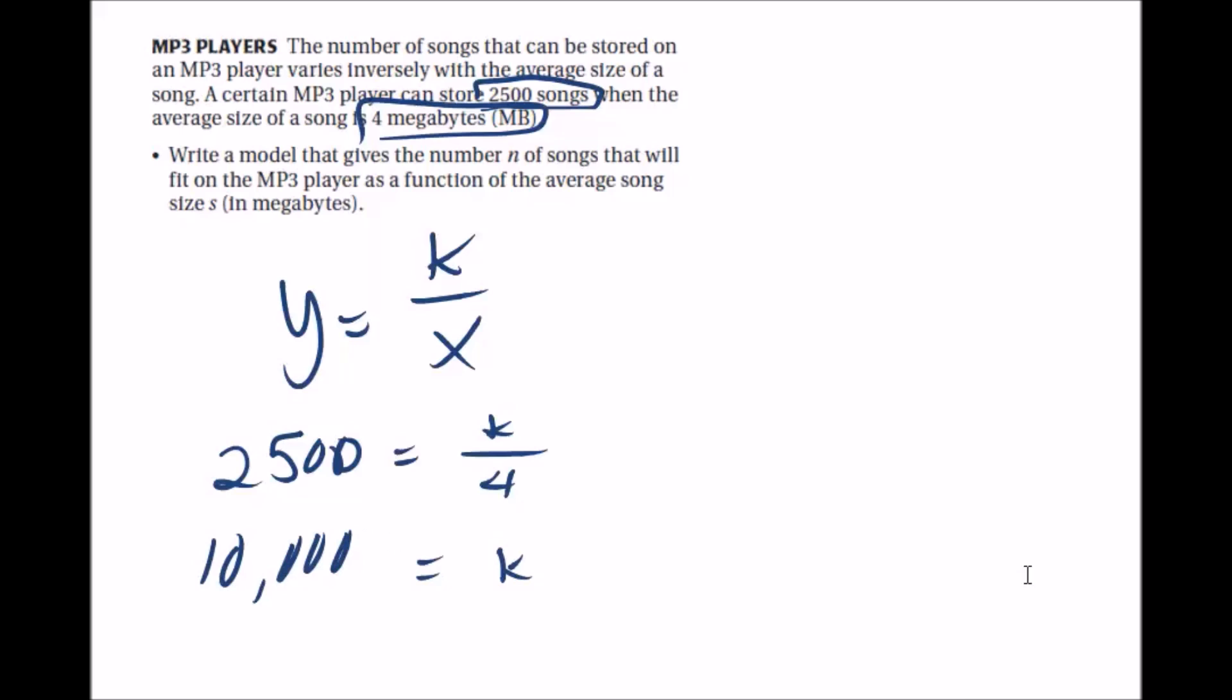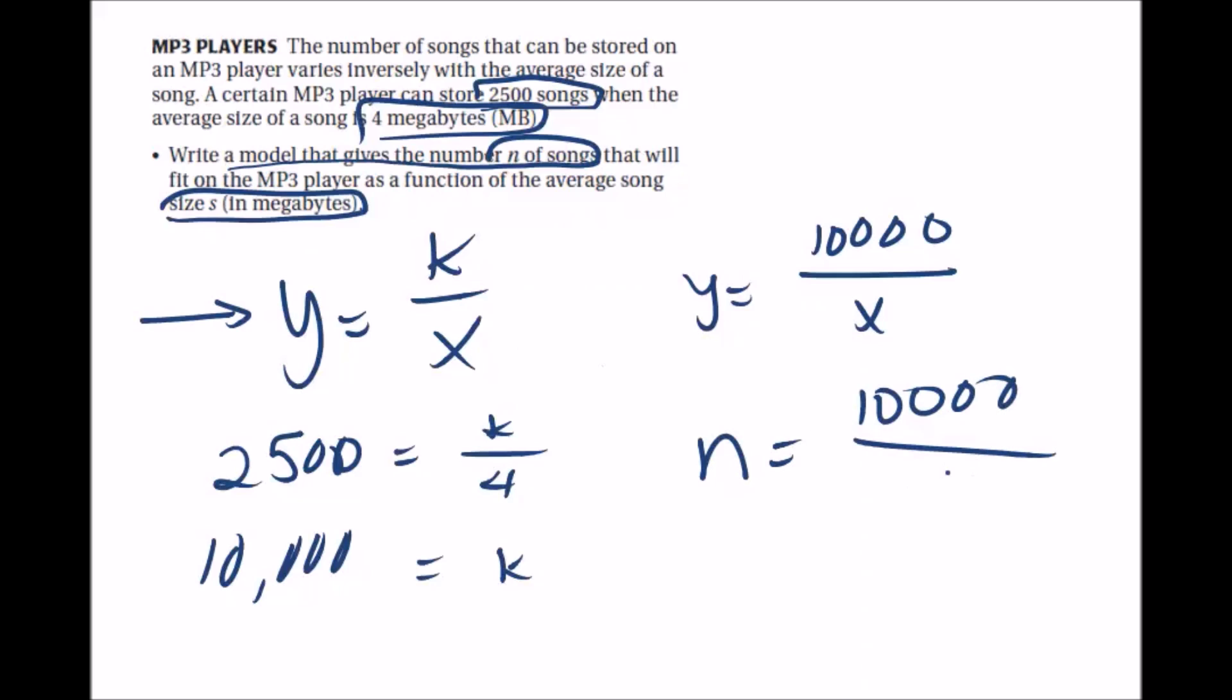That's our constant of variation. So writing that back into our equation, we have y equals 10,000 divided by x. Now, the only thing we have to pay attention to is it says write a model that gives the number of songs n that will fit on the mp3 player as a function of the average song size s. Well, when we did this originally, we put the number of songs as y, so that's our n, and song size we used x, so we're just going to write that in s. So the answer it wants is n equals the number of songs equals 10,000 divided by the average song size s.